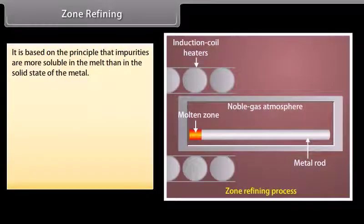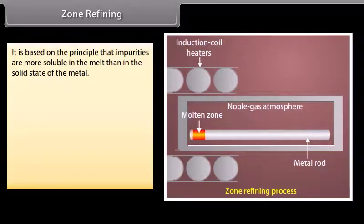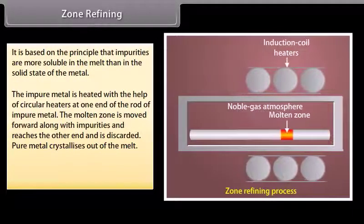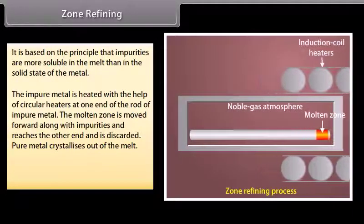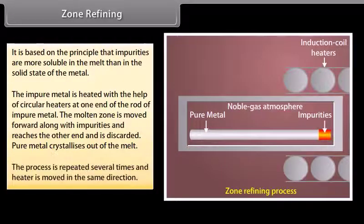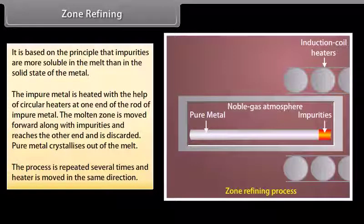Zone refining. It is based on the principle that impurities are more soluble in the melt than in the solid state of the metal. The impure metal is heated with the help of circular heaters at one end of the rod of impure metal. The molten zone is moved forward along with impurities and reaches the other end and is discarded. Pure metal crystallizes out of the melt. The process is repeated several times and heater is moved in the same direction. For example, it is used for purifying semiconductors.